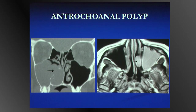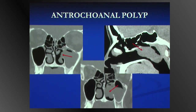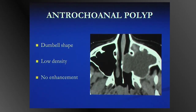An antrochoanal polyp is basically a big retention cyst — one that enlarges to fill the antrum but has very little space left to enlarge into. So it squeezes out, usually through the accessory ostium, into the middle meatus, forming a dumbbell-shaped, low-density structure. Running out of space in the middle meatus, it tracks backwards into the nasopharynx. Its imaging characteristics on CT and MR are of a big bag of fluid, dumbbell-shaped, following a specific pathway: filling the antrum, through the accessory ostium, into the middle meatus, then into the nasopharynx.